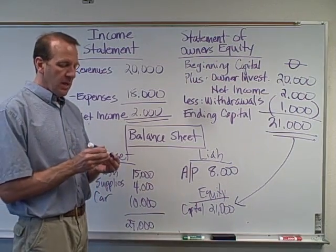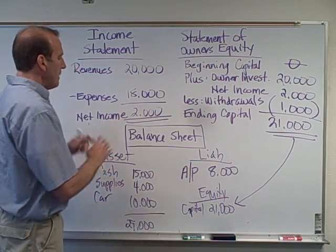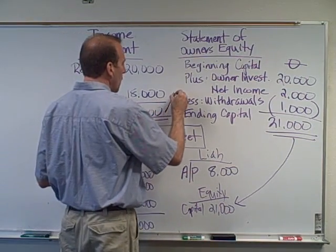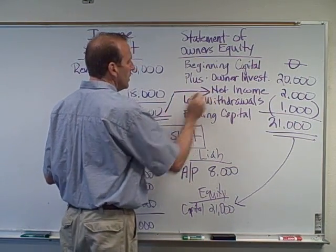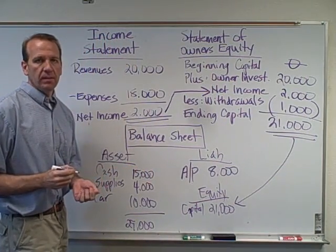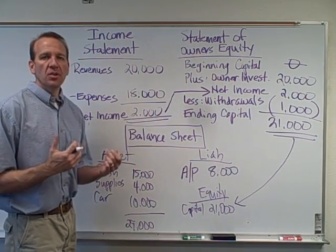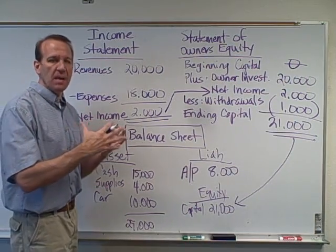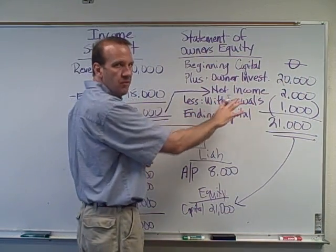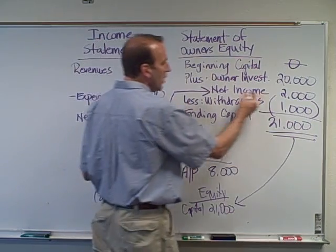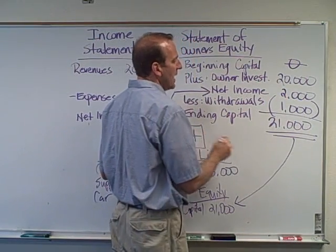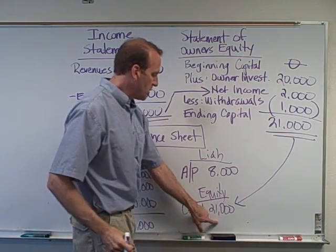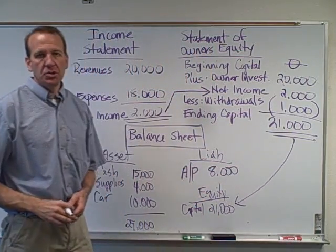Notice how I did these financial statements. I prepared the income statement first because the net income number is needed for the statement of owner's equity. This is called articulation — the relationship between financial statements, how numbers from one financial statement are needed in another. We did the statement of owner's equity next because the $21,000 for the capital account was needed to prepare our balance sheet.